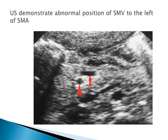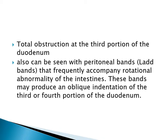On ultrasound, midgut volvulus demonstrates an abnormal position of the superior mesenteric vein to the left of the superior mesenteric artery - normally it is to the right because the IVC is on the right. Total obstruction at the third portion of the duodenum can also be seen with peritoneal bands that frequently accompany rotational abnormality of the intestine. These bands may produce an oblique indentation of the third or fourth portion of the duodenum.